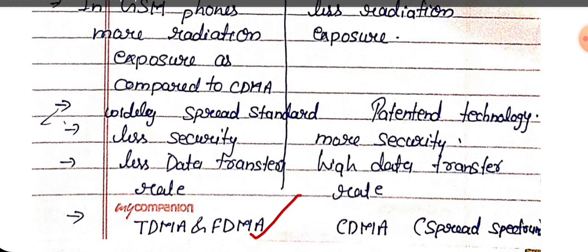GSM uses Time Division Multiple Access and Frequency Division Multiple Access, while CDMA uses Code Division Multiple Access. This is all about the comparison between GSM and CDMA. Thank you so much.